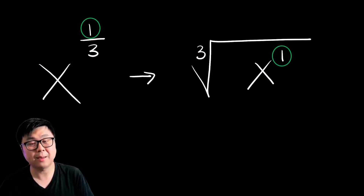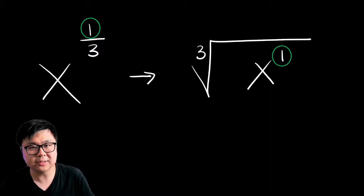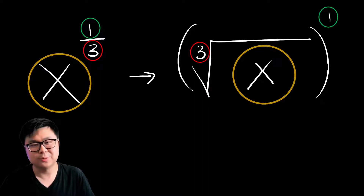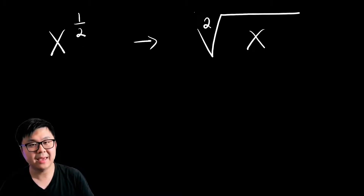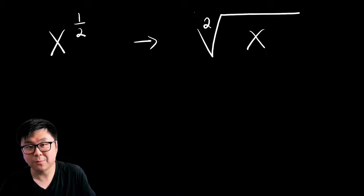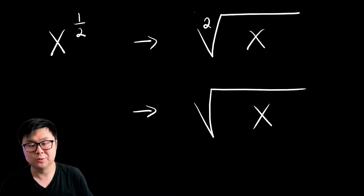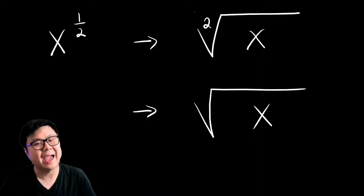There's another way we can place the numerator in your exponent — we can put it as an exponent in the radicand. For the most part, it really doesn't matter which way you do it. I will stick with putting a bracket around your radical and the exponent on the outside. Here we have x to the power of one-half. We can put the x in the radicand and the 2 in the index slot. But remember, the default index is 2, which means we don't even have to write that — we can just write the square root of x. You can only leave the index blank if it's a 2; if it's a 3 or 4, you have to write those numbers.